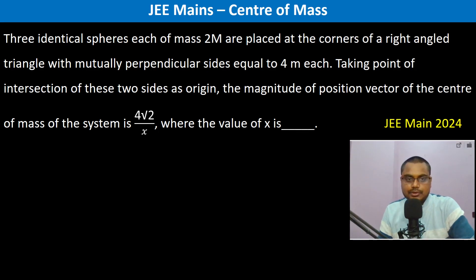Three identical spheres each of mass 2m are placed at the corners of a right angle triangle with mutually perpendicular sides equal to 4m each.